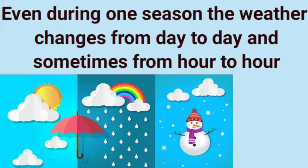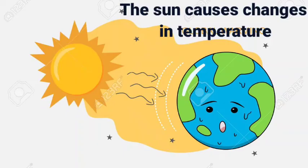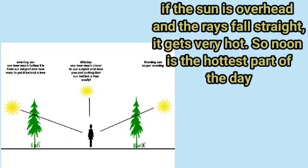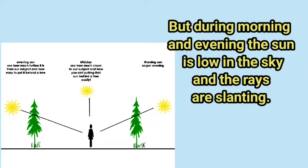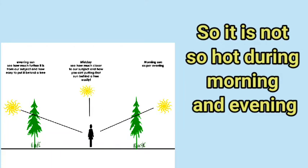Even during one season, the weather changes from day to day and sometimes from hour to hour. The sun causes changes in temperature. If the sun is overhead and the rays fall straight, it gets very hot, so noon is the hottest part of the day. But during morning and evening, the sun is low in the sky and the rays are slanting, so it is not so hot during morning and evening.